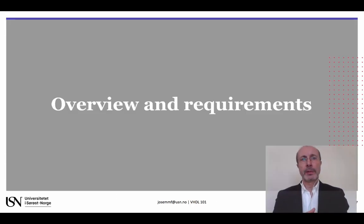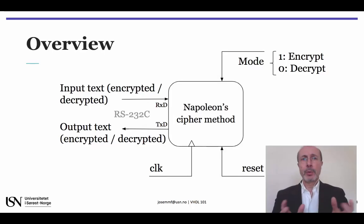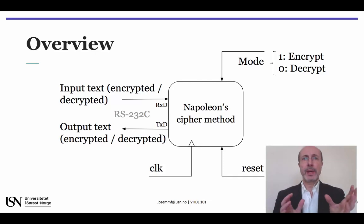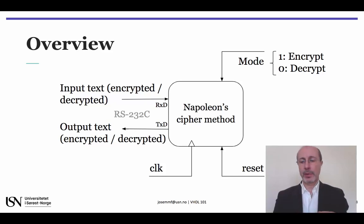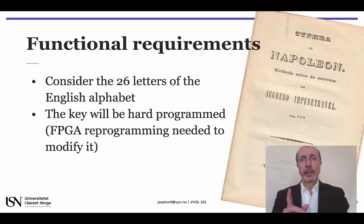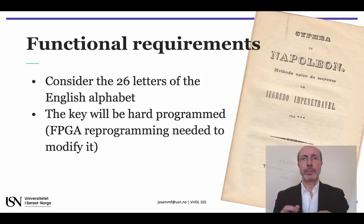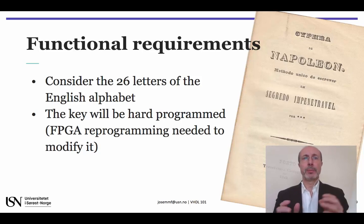Let's now move on to the overview and requirements. You are being asked to develop an application that receives a string of ASCII codes via RS-232C and returns the same message in encrypted or decrypted form using a given key of your choice. You should consider the 26 letters in the English alphabet and the key used in the encryption process should be hard programmed into the FPGA, meaning that if you want to use a different encryption key, you will have to reprogram the FPGA.